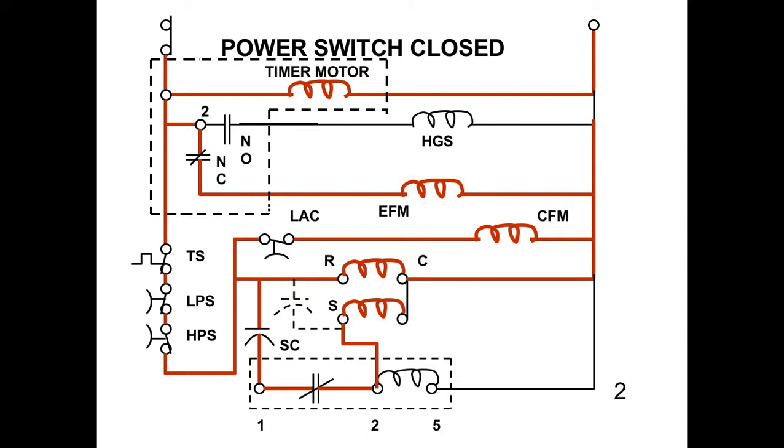So we close the power switch. Now notice the red on the diagram. The timer motor is energized because that's line-to-line. Our normally closed from pin 2 of the defrost clock allows our evaporator fan to energize. Our thermostat is calling for cooling, our pressure switches are closed. So our condenser fan motor, our compressor, run and start winding, because it's just starting up, is energized. The potential relay, which is down here at the bottom in the dotted lines, with the start cap in series with pin 1, 2, and the start winding, that is a brief moment in time. That is only energized as the compressor starts.